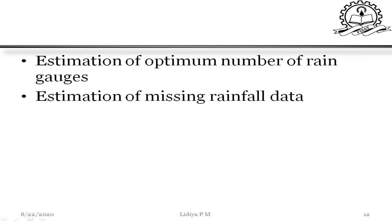In the last video we discussed rain gauge density, optimum number of rain gauges, and different methods for estimating missing rainfall data. Today we'll be discussing problems regarding estimation of the optimum number of rain gauges and estimation of missing rainfall data.